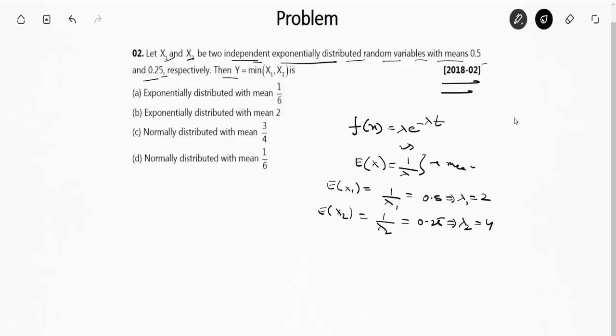Now, Y = min(X1, X2). Similarly, Y will follow the same equation, which is an exponentially distributed random variable function. It will be this function, but what would be its mean?